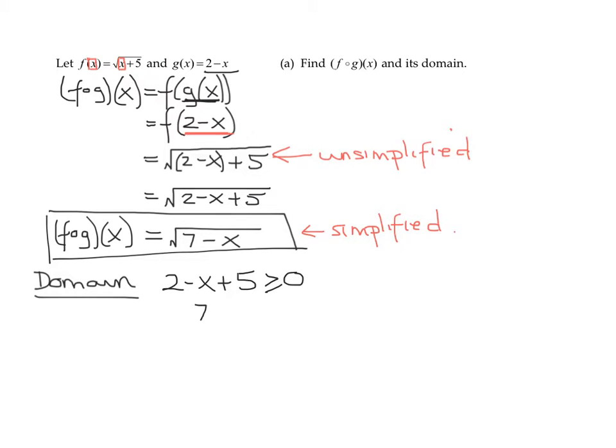So 2 minus x plus 5 has to be greater than or equal to 0. I get 7 minus x is greater than or equal to 0. Subtracting 7 from both sides, negative x is greater than or equal to negative 7. But please be careful, I'm going to divide an inequality by a negative number, so I have to reverse the inequality. The greater than or equal to becomes less than or equal to. So I get x is less than or equal to 7.